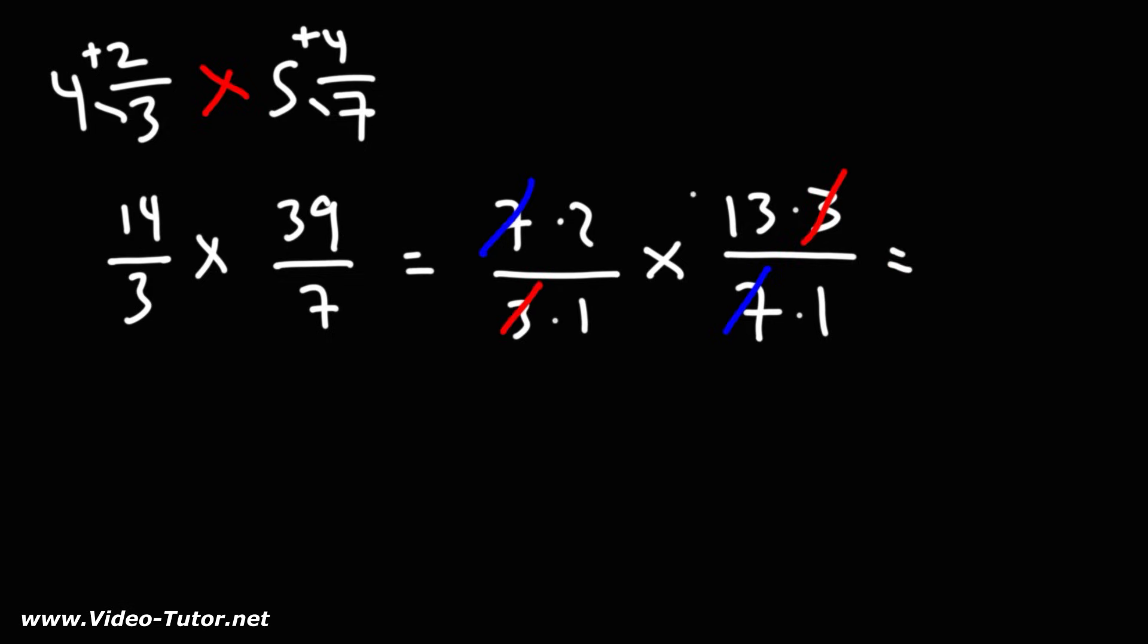So we're left with 2 times 13, which is 26. 1 times 1 is 1. 26 divided by 1 is just 26. So the final answer is 26.